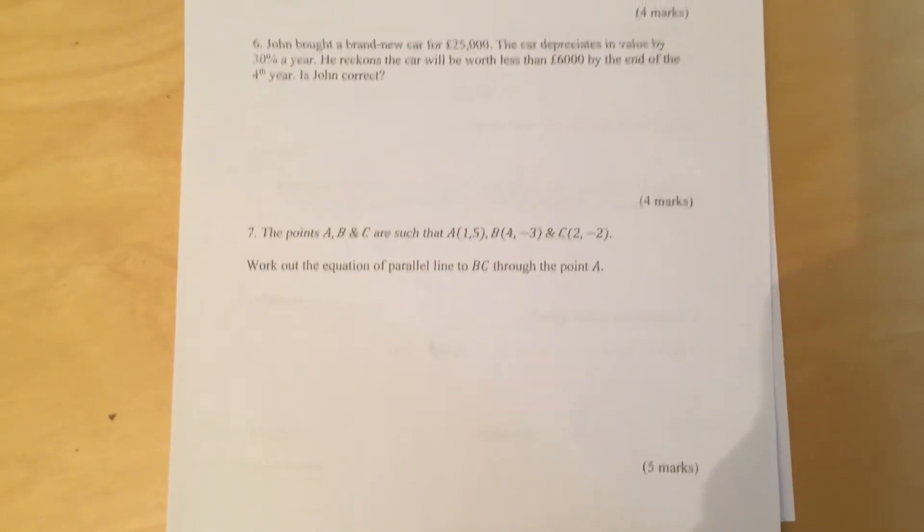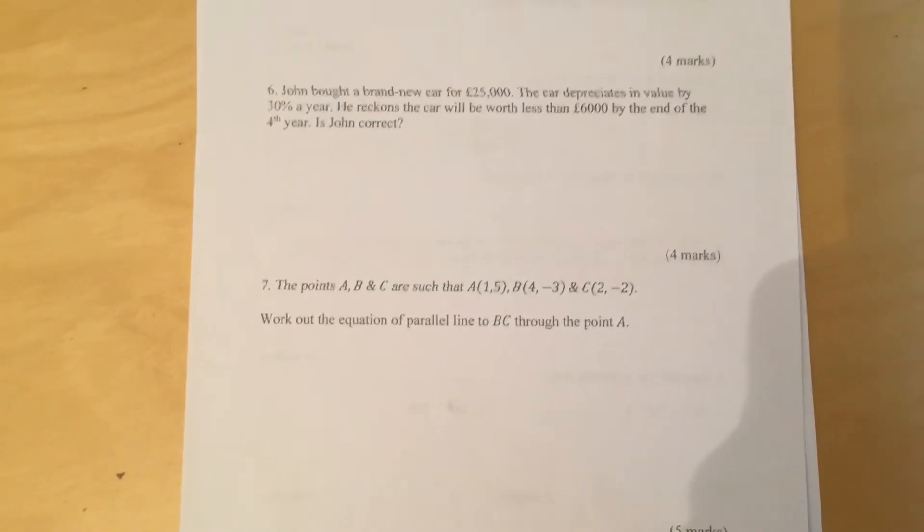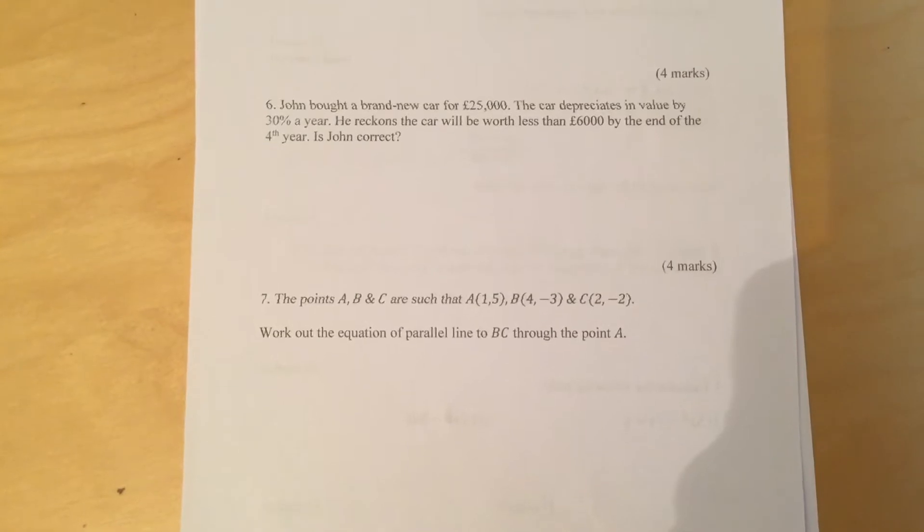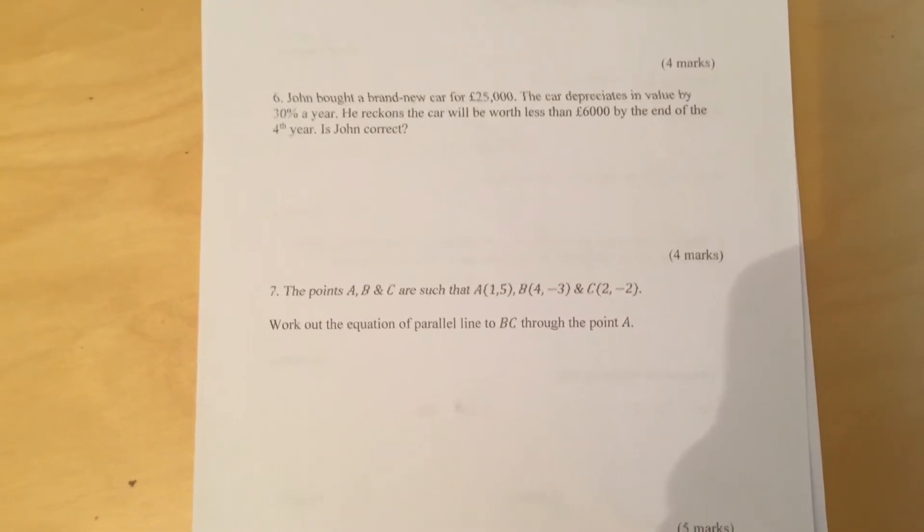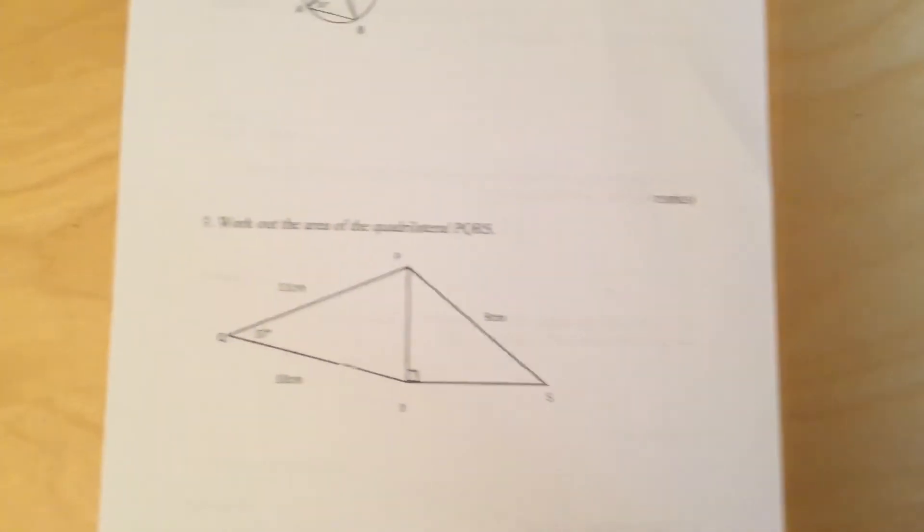Question 7. The points A, B, and C are such that A is 1, 5, B is 4 minus 3, and C is 2 minus 2. Work out the equation of a parallel line to BC through the point A. So that is question 7.